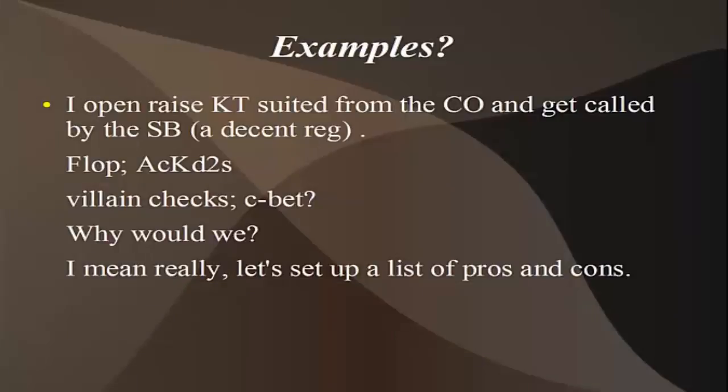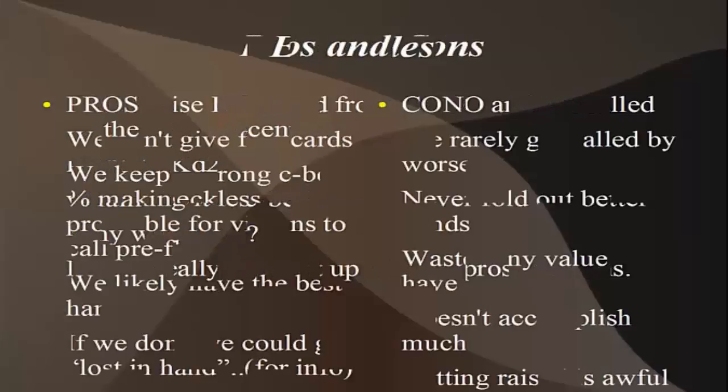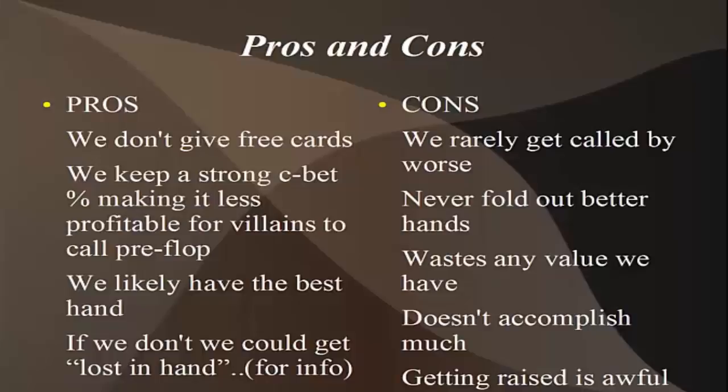Let's do a list of pros and cons. We have king-ten. The flop is ace, king, two in position against a decent player who flat called preflop from the blinds. What are the pros and what are the cons of c-betting here? We've got second pair with a mediocre kicker. The pros would be: if our opponent has something like a gutshot straight draw, we don't give him three free cards. There's value in not letting our opponent bank free outs against us. So we don't give free cards — that's a pro for c-betting.